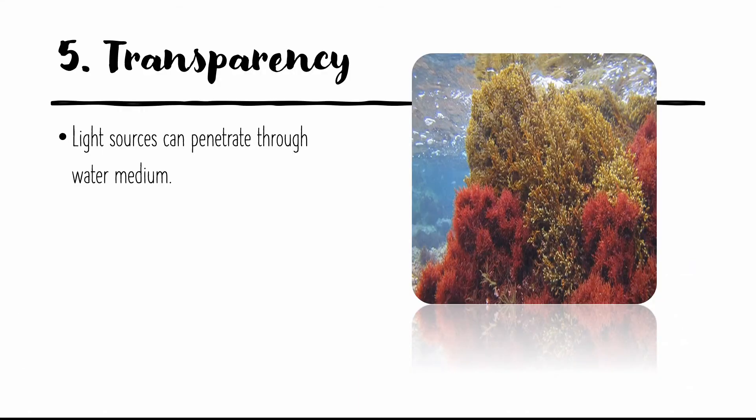The next property is transparency. Light can penetrate through water because of its transparency, which enables photosynthesis to occur in lakes or oceans.